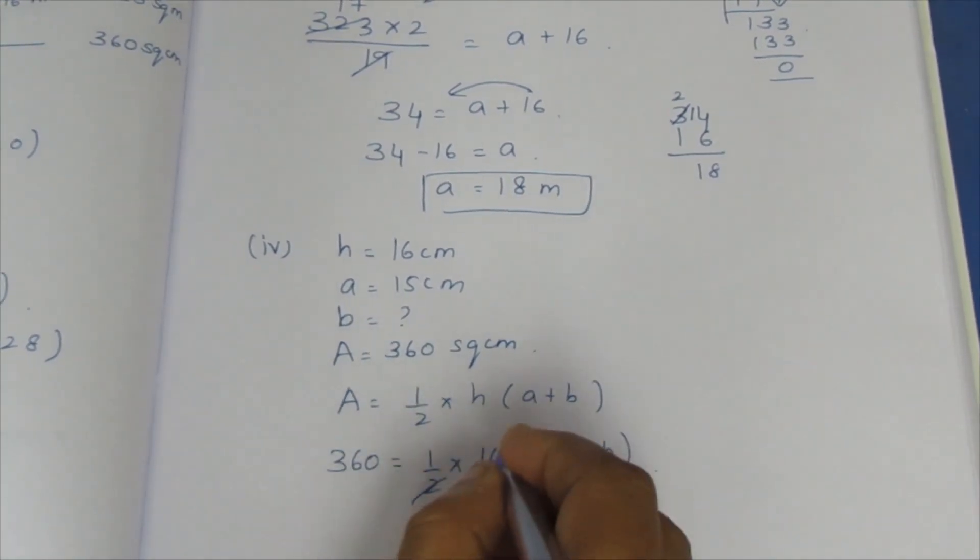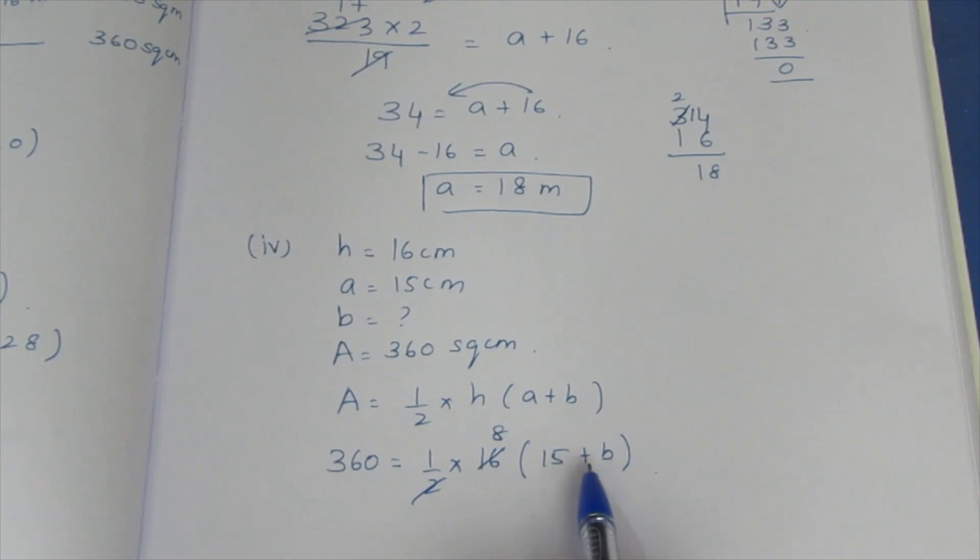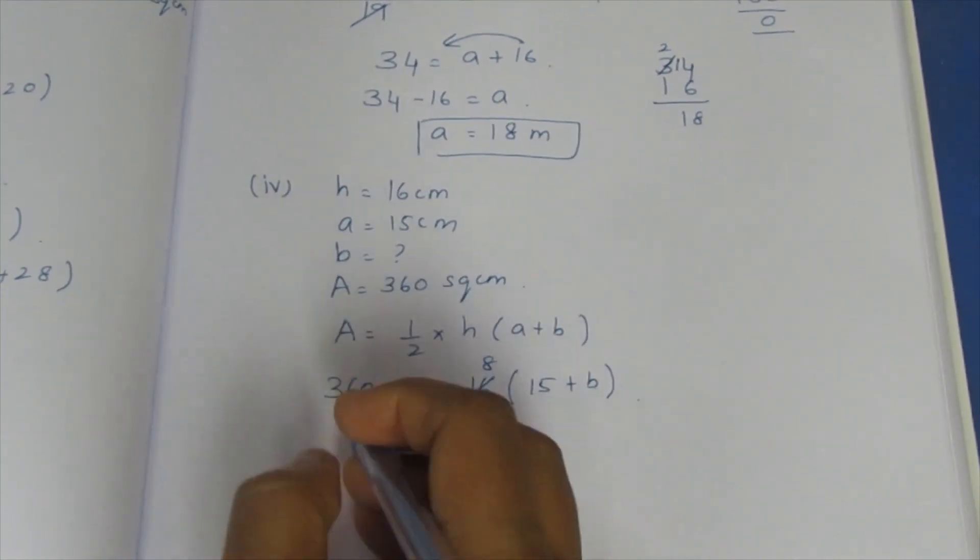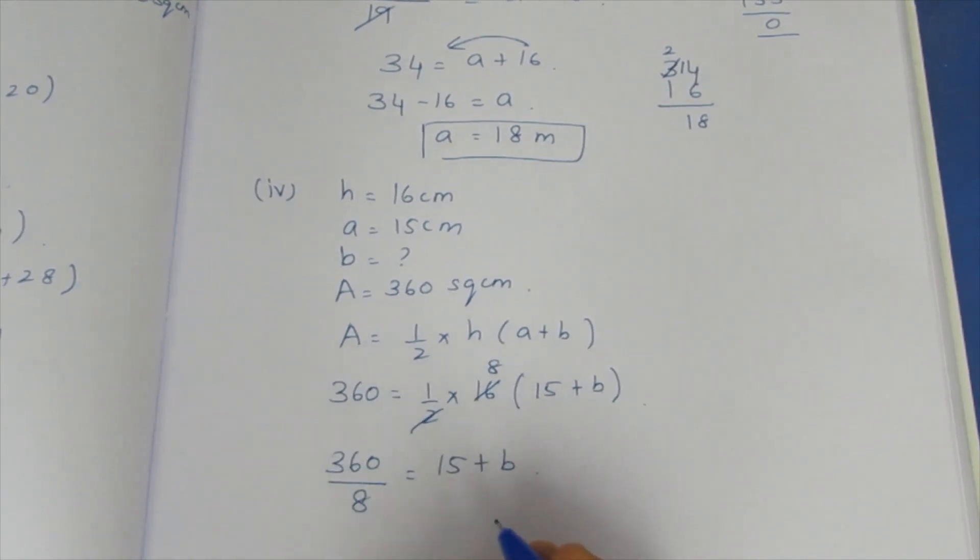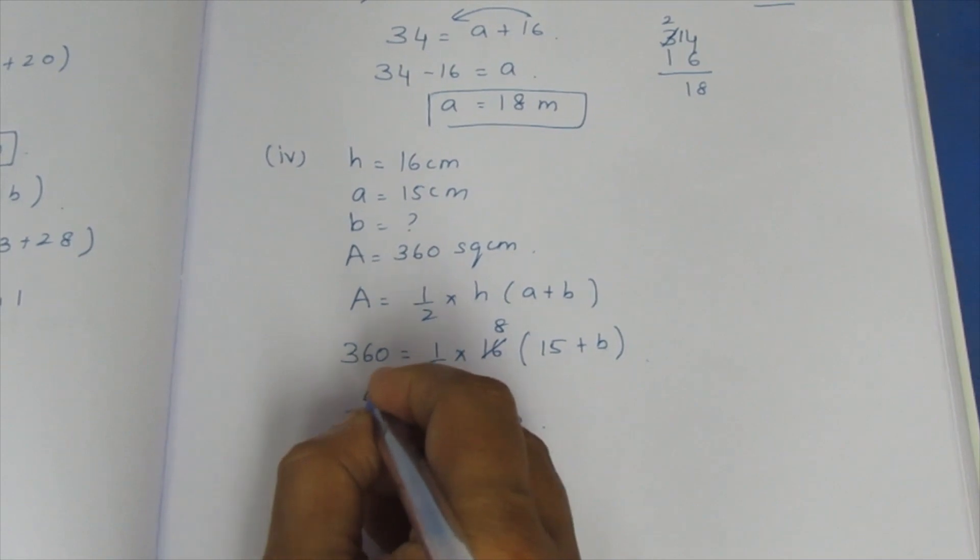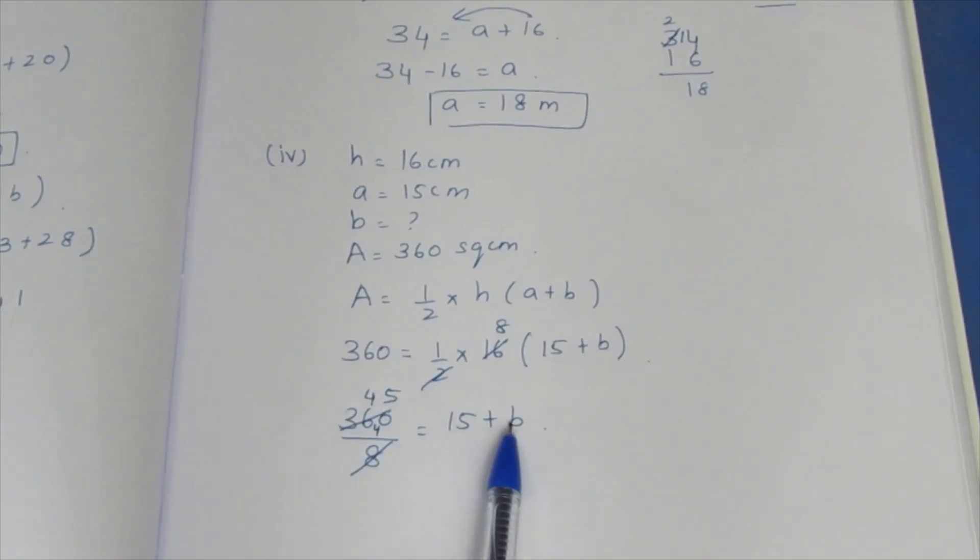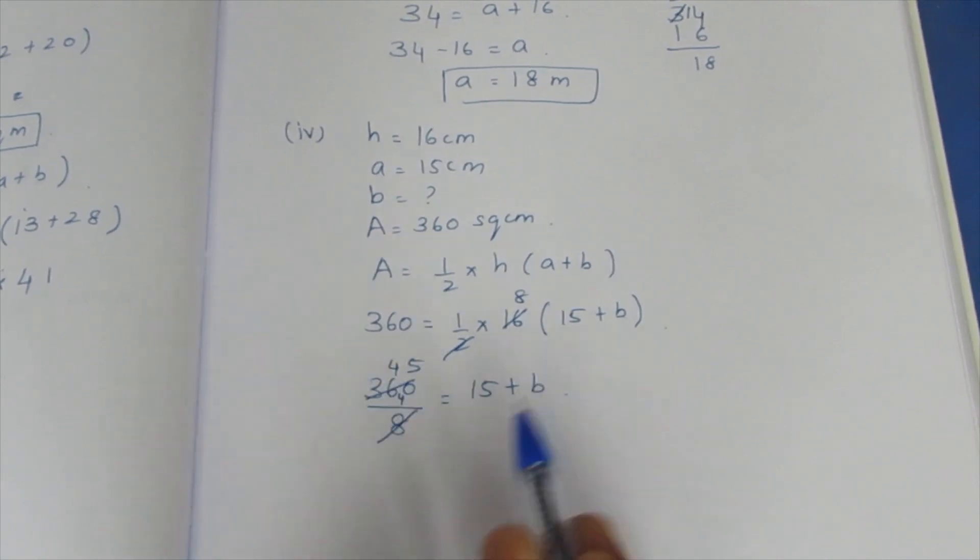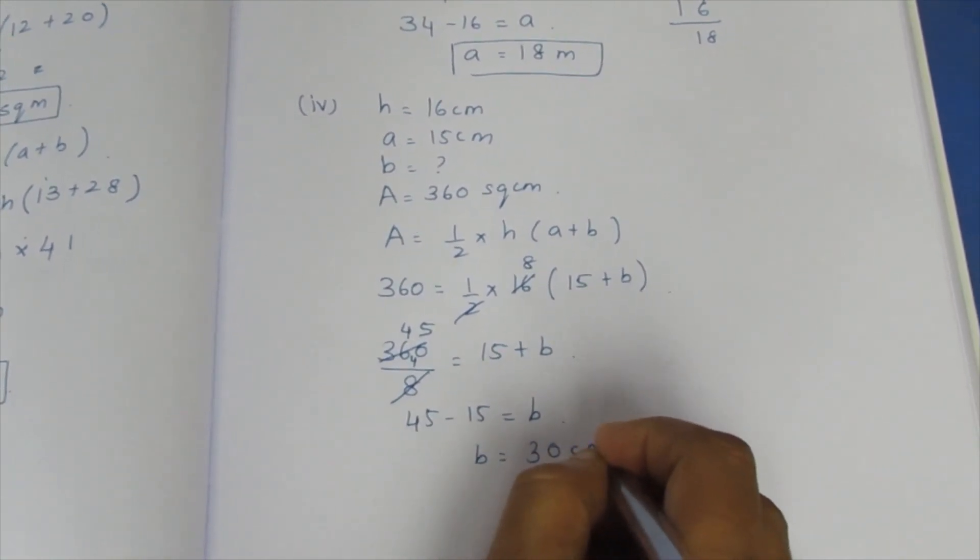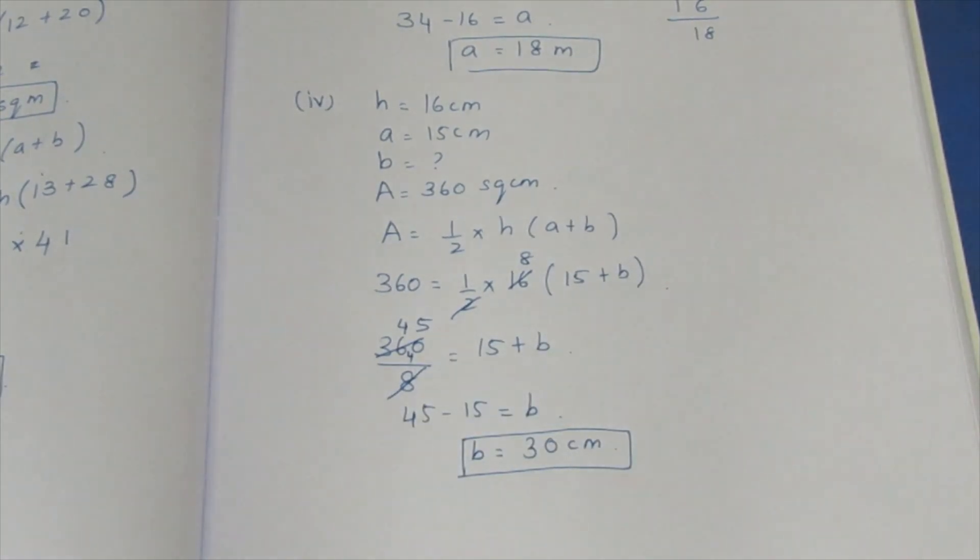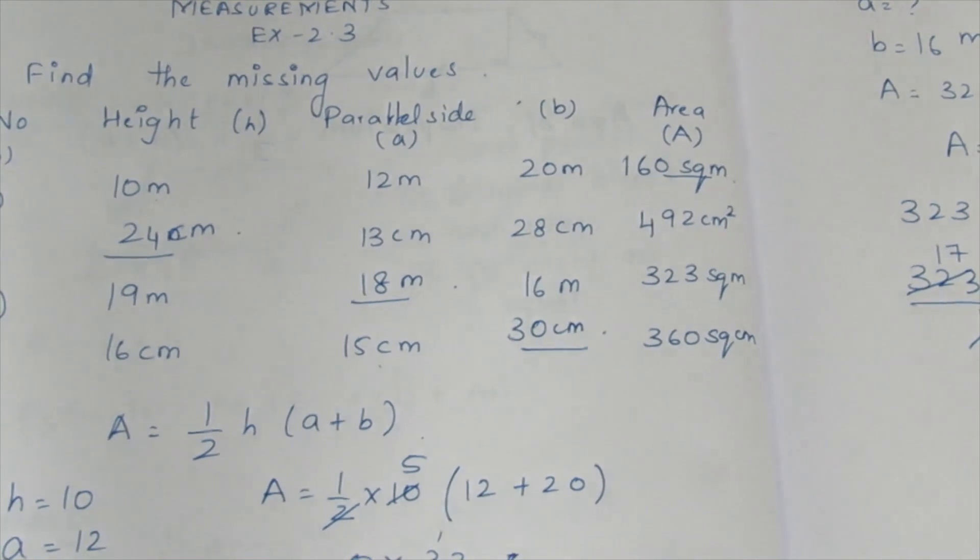Cancel two. Cancel: 8 is equal to 8 times 15 plus B. 8 table is cancelled. 8 times 4 is 32, 32 plus 8 is 40. 8 times 5 is 40, so 45 equals 15 plus B. 45 minus 15 is equal to B. B is equal to 30 centimeters. So fill 30 centimeters in the table column.